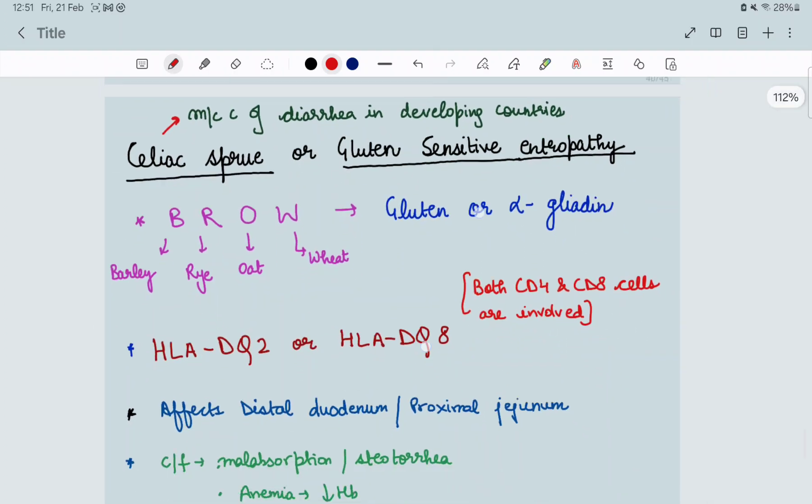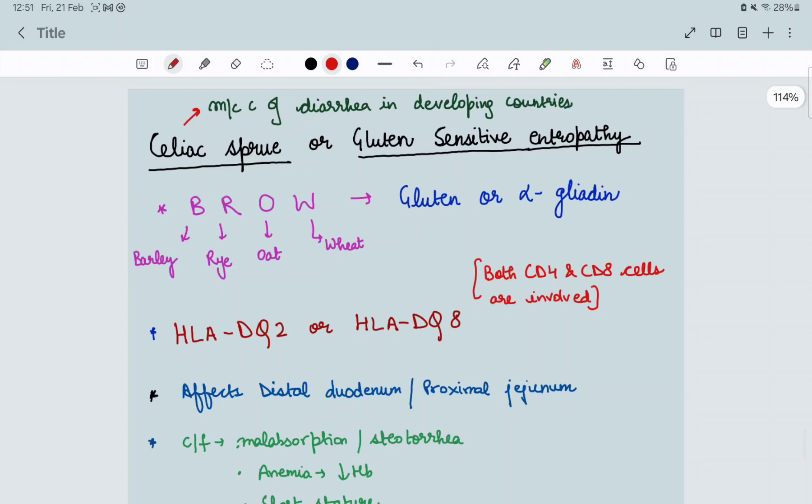Let's start with this celiac disease. What does celiac disease or celiac sprue or gluten sensitive enteropathy mean? Why gluten sensitive? Because in foods like BROW, that is barley, rye, oat and wheat, we have gluten or alpha-gliadin which is an alcohol soluble fraction that some people are allergic to.